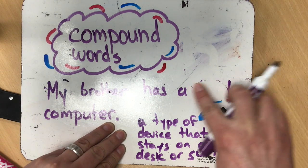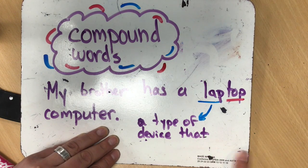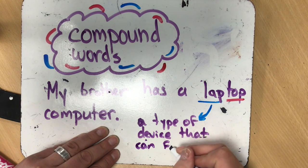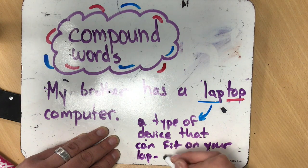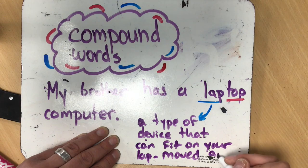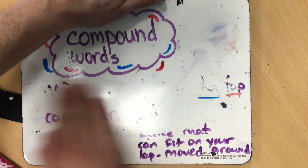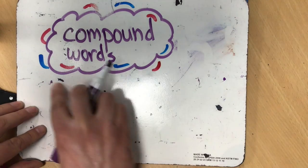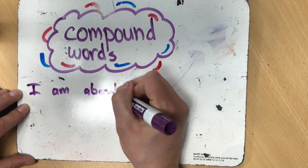You might be more familiar with this variation of desktop: laptop. Now a laptop is not the top of your lap. While you can put a laptop computer on your lap, it more means something that might fit on your lap. So a better definition of a laptop computer or a laptop device is something that can be moved or that you can carry around with you. That is just one example of a bit more of a complex compound word.